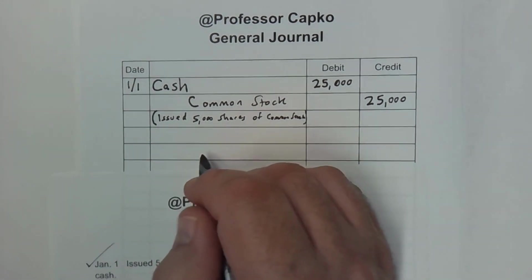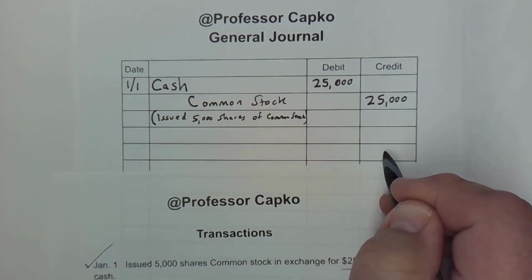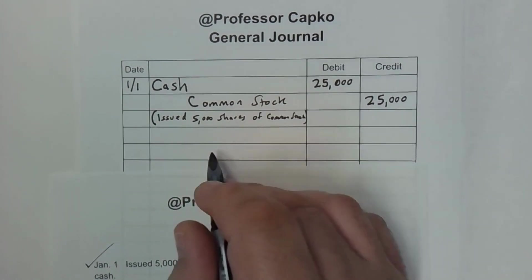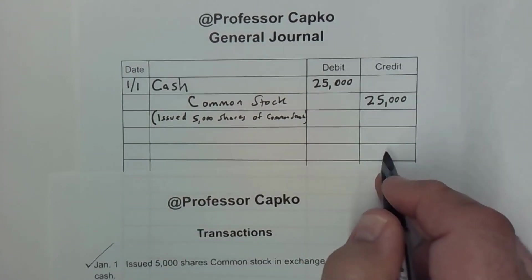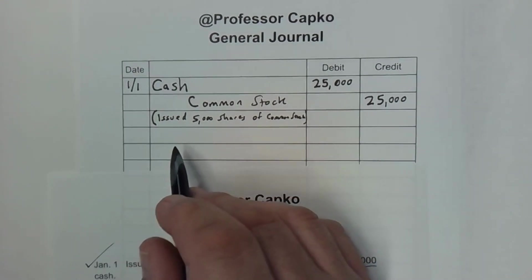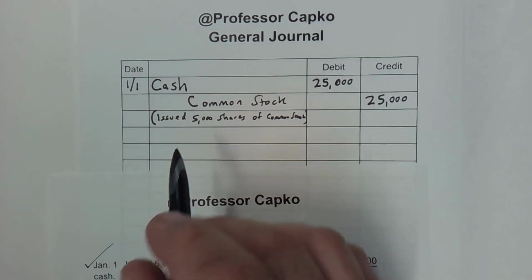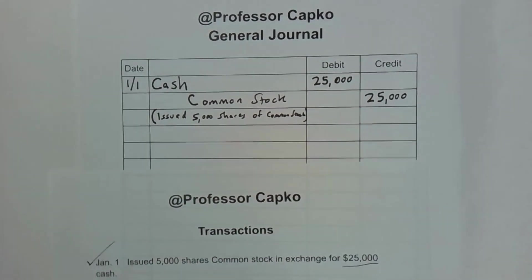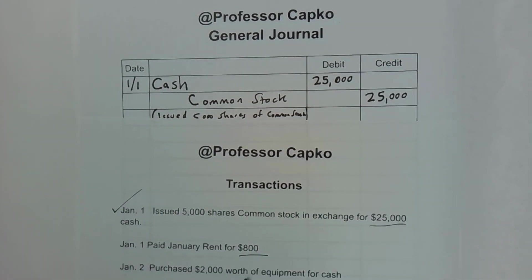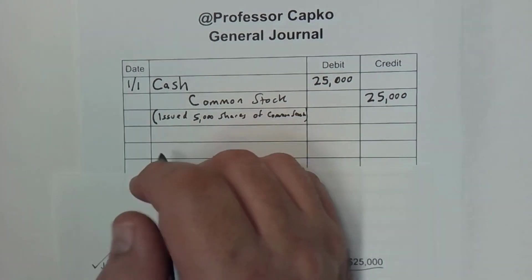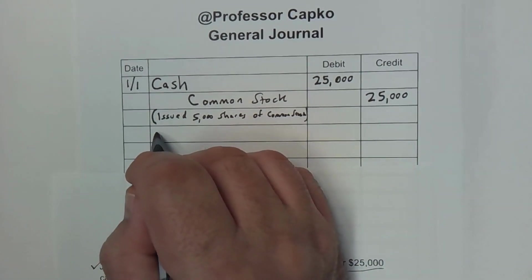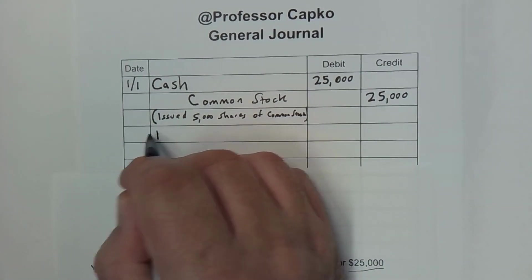So I know that's going to be a credit — that's going to be my second entry. I always start with the debits. So what do I debit? Well, we paid rent. We paid rent for January.